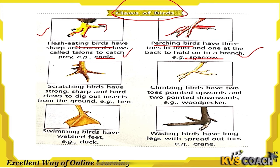The third type is scratching birds. They have strong, sharp and hard claws to dig out insects from the ground. An example is the hen. They have very sharp claws so they can dig soil and extract insects from the ground.